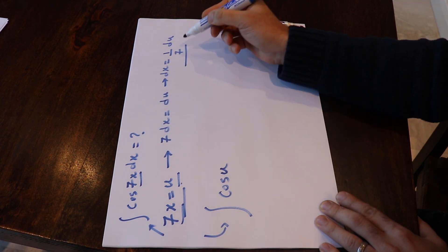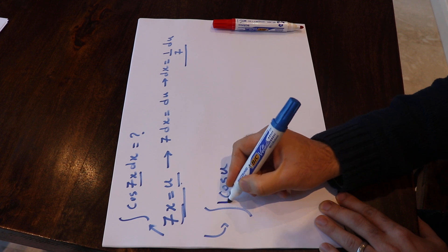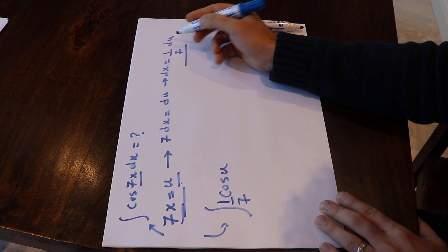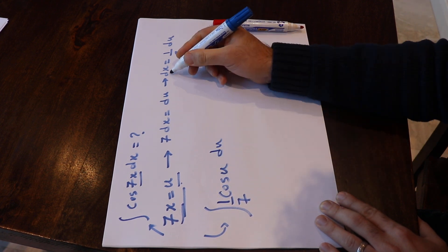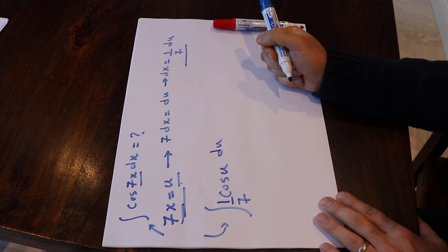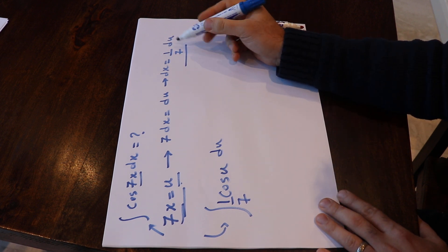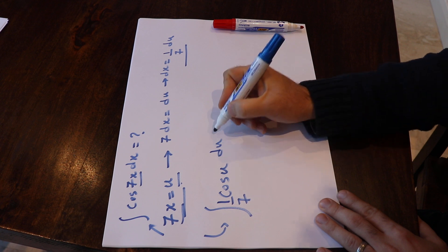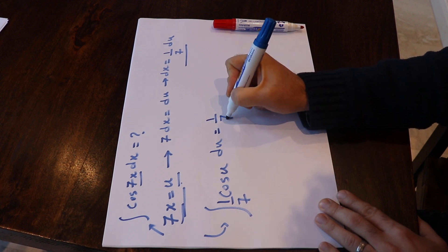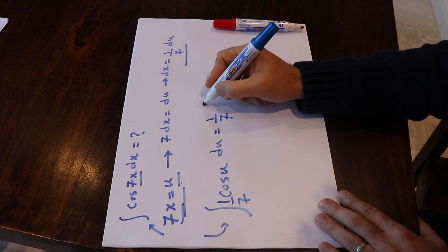And instead of dx, I put 1 divided by 7 times du. And this integral will be equal to 1 divided by 7, that is the constant. I can take it out of the integral, integral cosine u du.